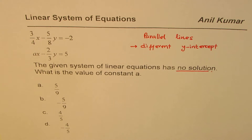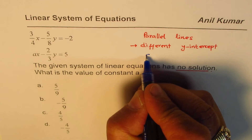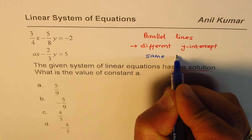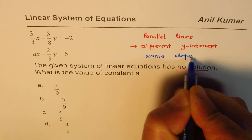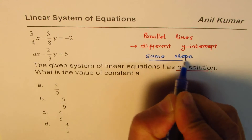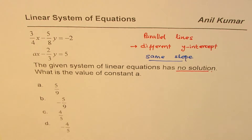Parallel lines mean same slope. So we'll rewrite these equations in slope-intercept form and then equate the slopes to get the answer.